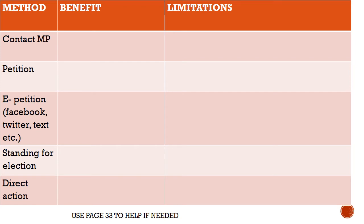Contacting your MP is valuable because your MP is your direct line to government. If you've got a concern about how the country is being run, you email your MP, they raise it with the relevant person in government, and you get a reply. The limitations are that an MP has around 70,000 constituents and can't represent just your individual voice. If you campaign for them to vote one way and they vote another, it's because they have to represent everyone, not just you.